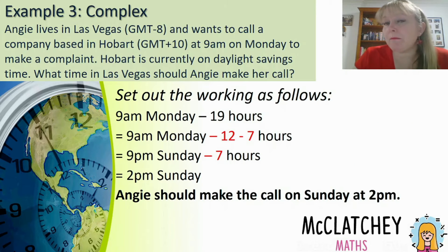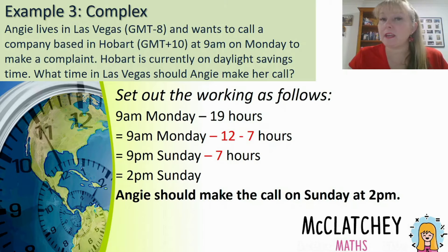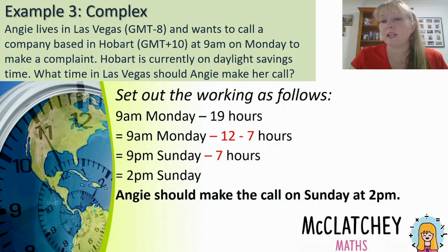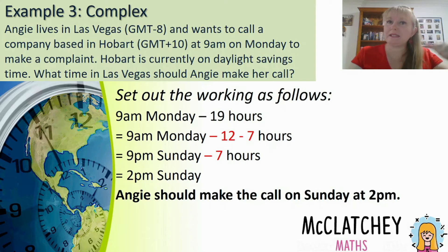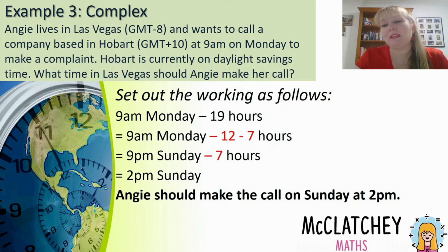Here's how I'd set out the working: 9am Monday take away 19 hours becomes 9am Monday take away 12, take away 7. Flick the 9am to 9pm, flick the day to the day before because you've gone back 12 hours, then take 7 more hours off to get 2pm. Always write a statement at the end — Angie should make the call on Sunday at 2pm.